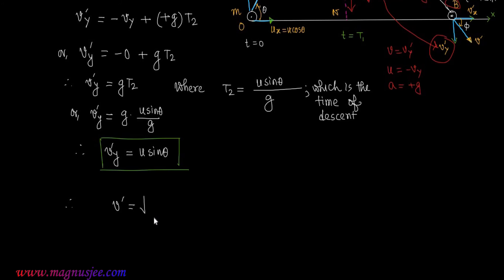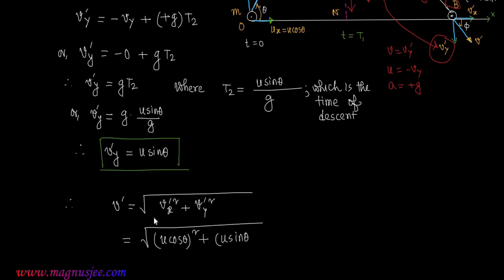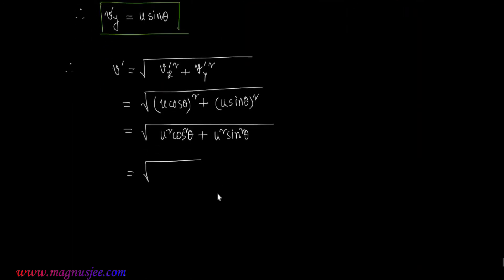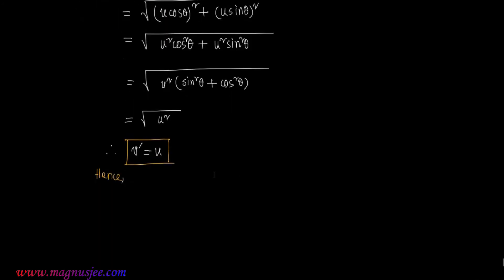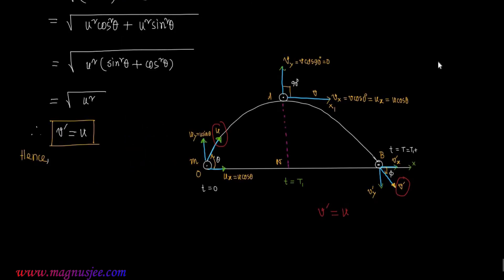That is, the vertical component of velocity at point B in the vertically downward direction equals U sin theta. Substituting into V prime = √(Vx prime² + Vy prime²), we get V prime = √(U cos theta)² + (U sin theta)² = √[U²(cos²theta + sin²theta)] = √U² = U. Therefore, V prime = U.